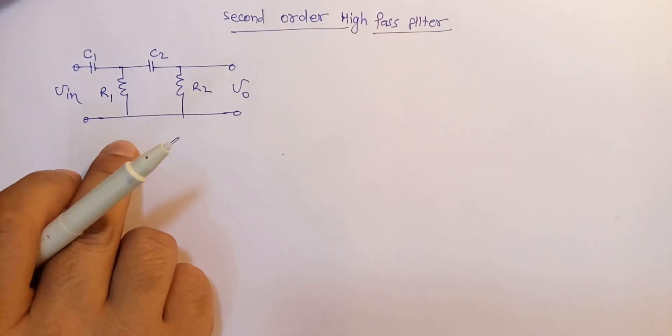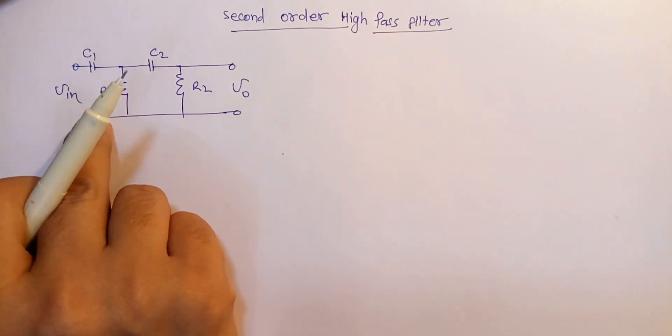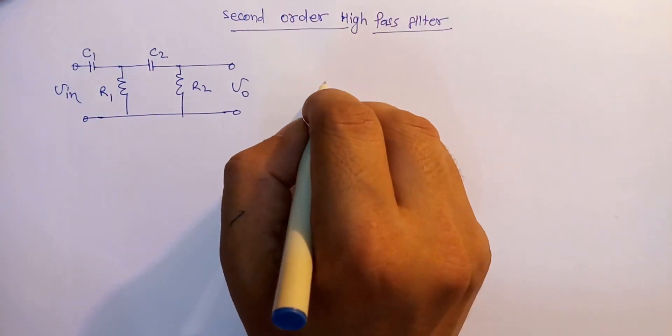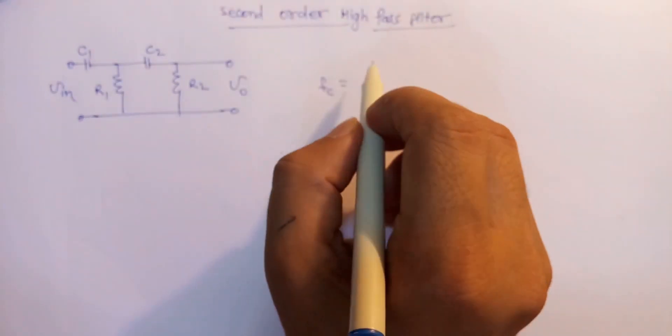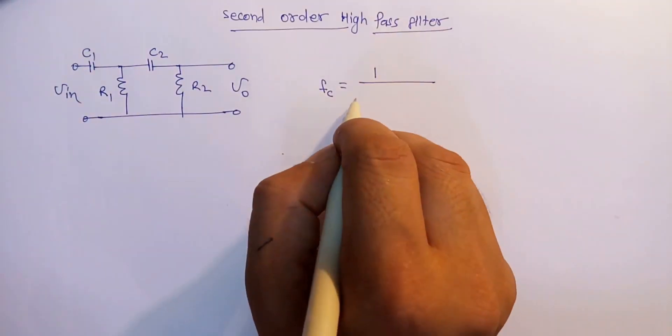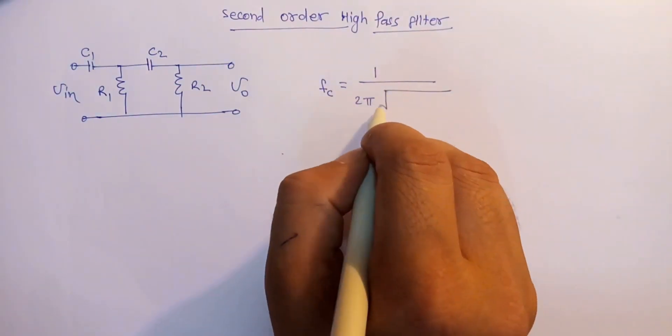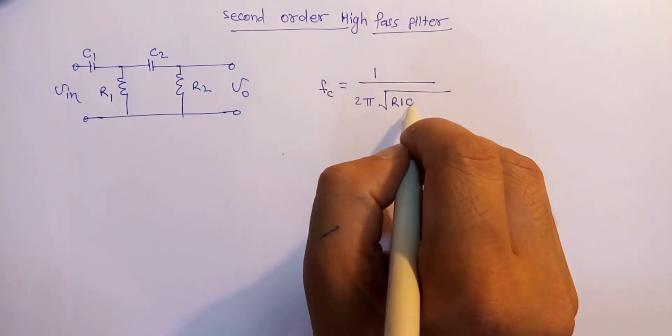So now the question is what will be the cutoff frequency for the second order filter. For the second order filter, FC will be equivalent to 1 upon 2 pi under root R1, C1,